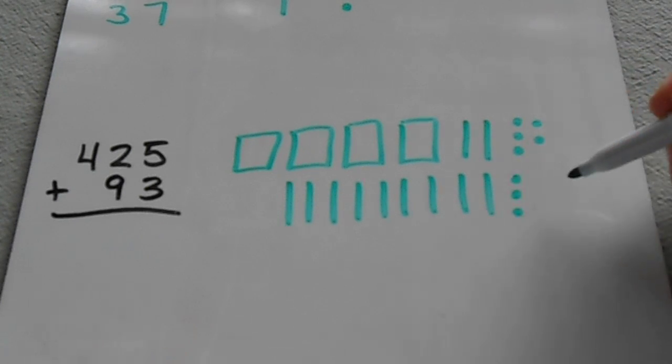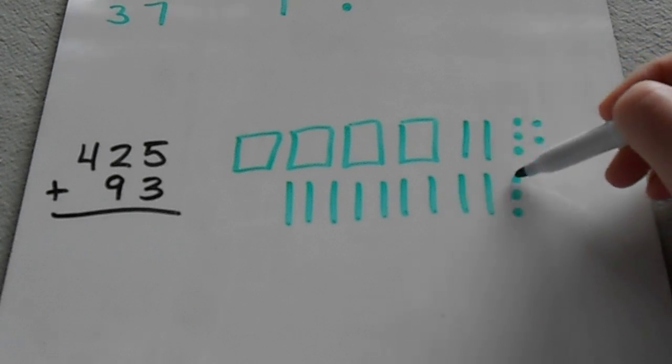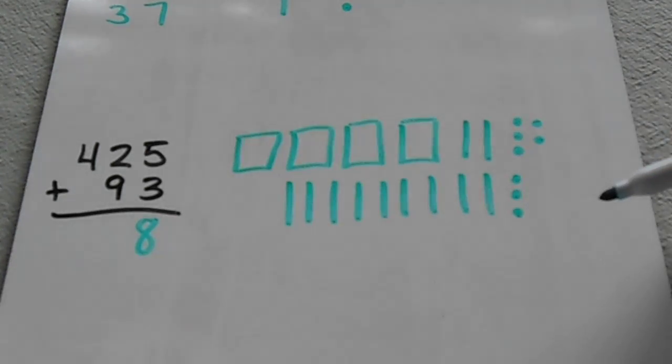We're going to start at the ones place. We always start with our smallest place value and count those up: 1, 2, 3, 4, 5, 6, 7, 8. So no regrouping is necessary there.